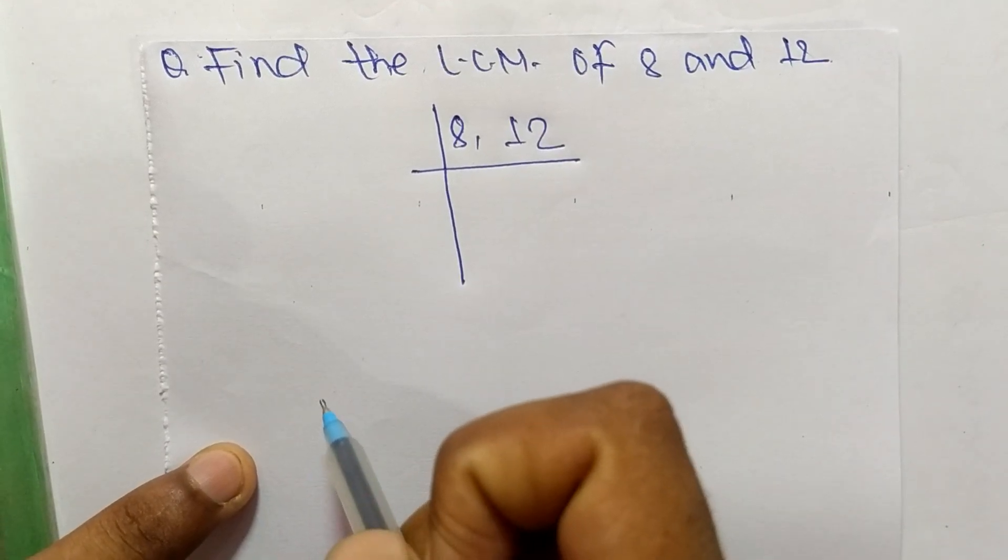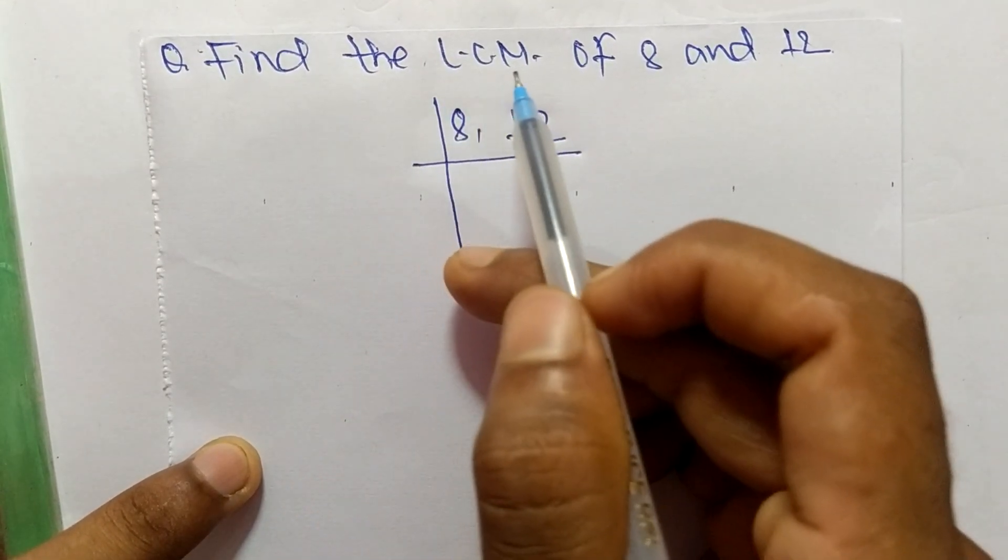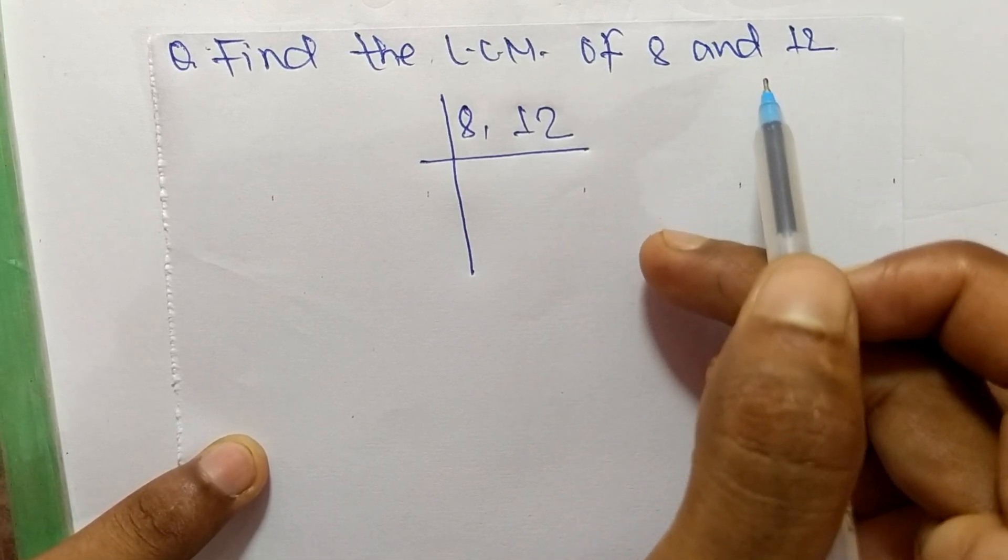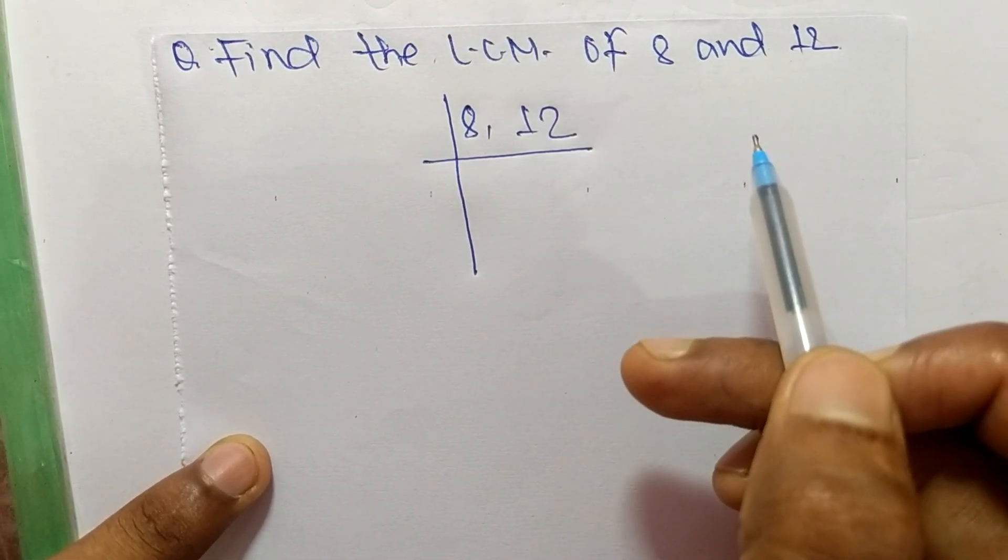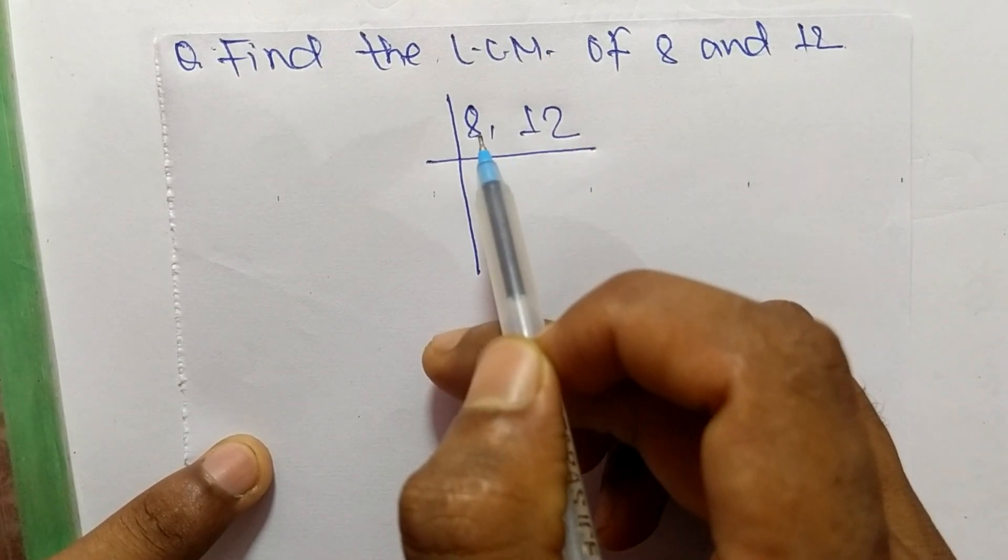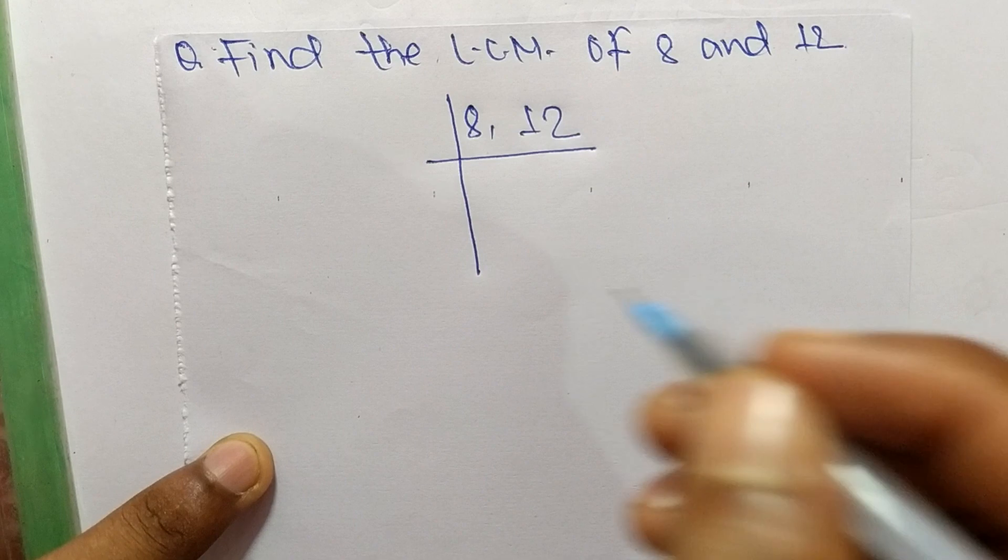So today in this video we shall learn to find the LCM of 8 and 12. To find LCM, first of all we have to choose the lowest number which can exactly divide 8 and 12.